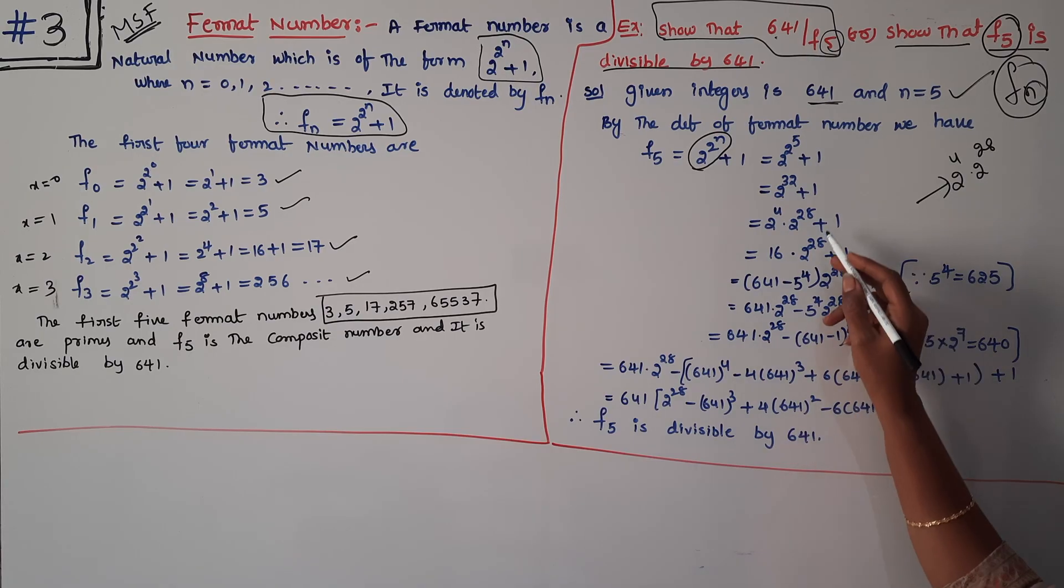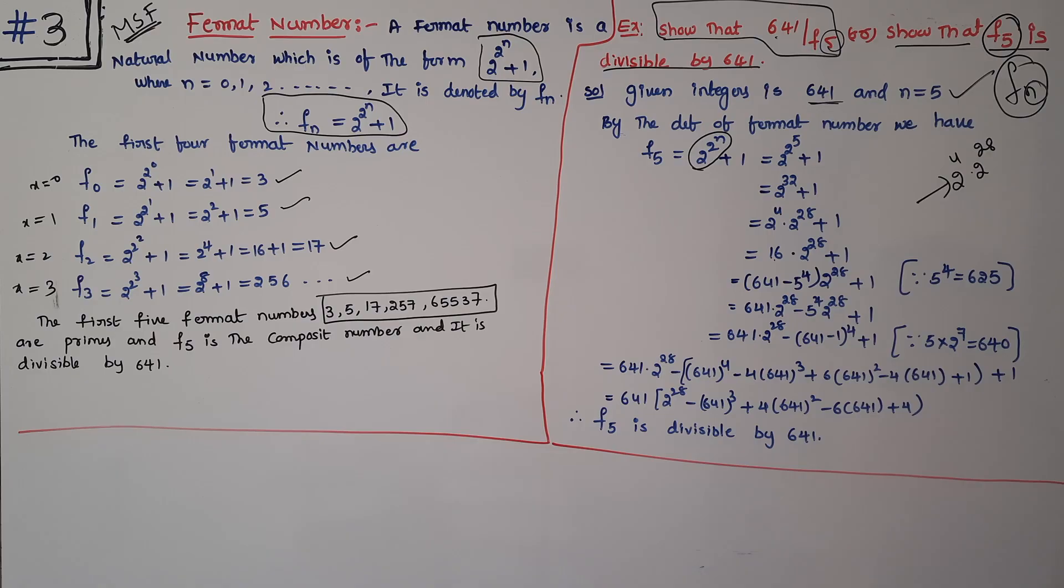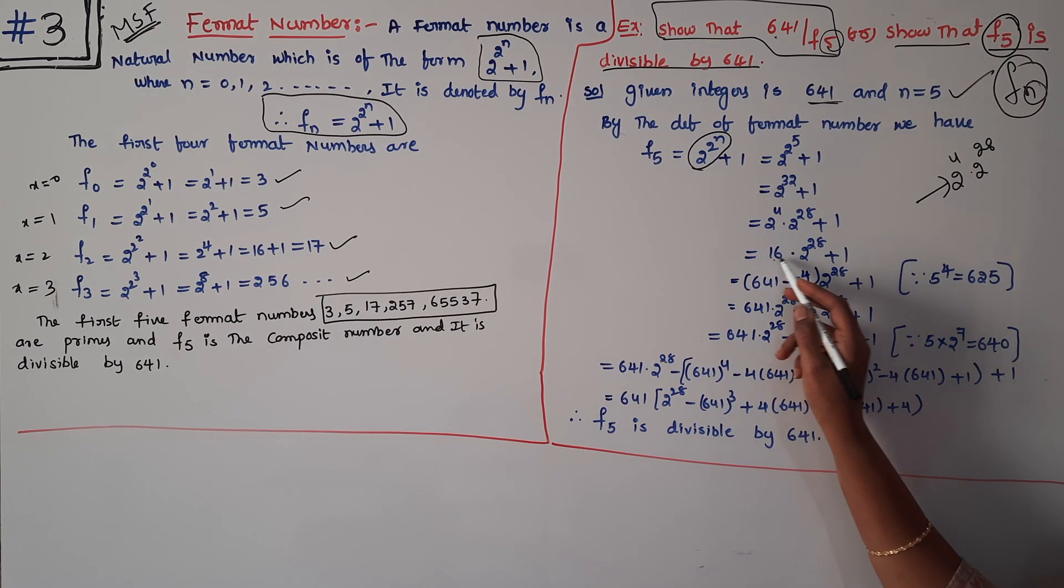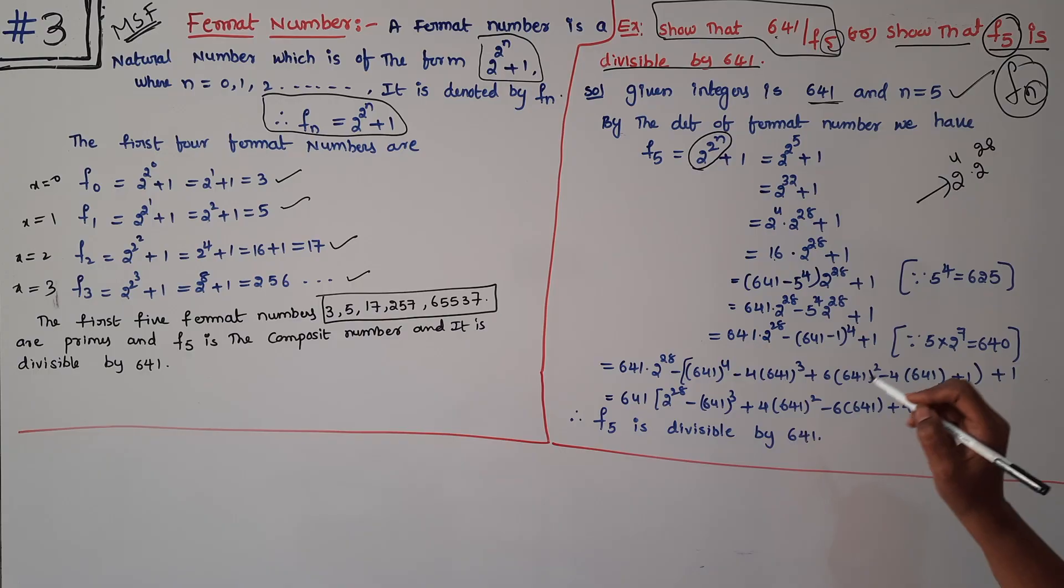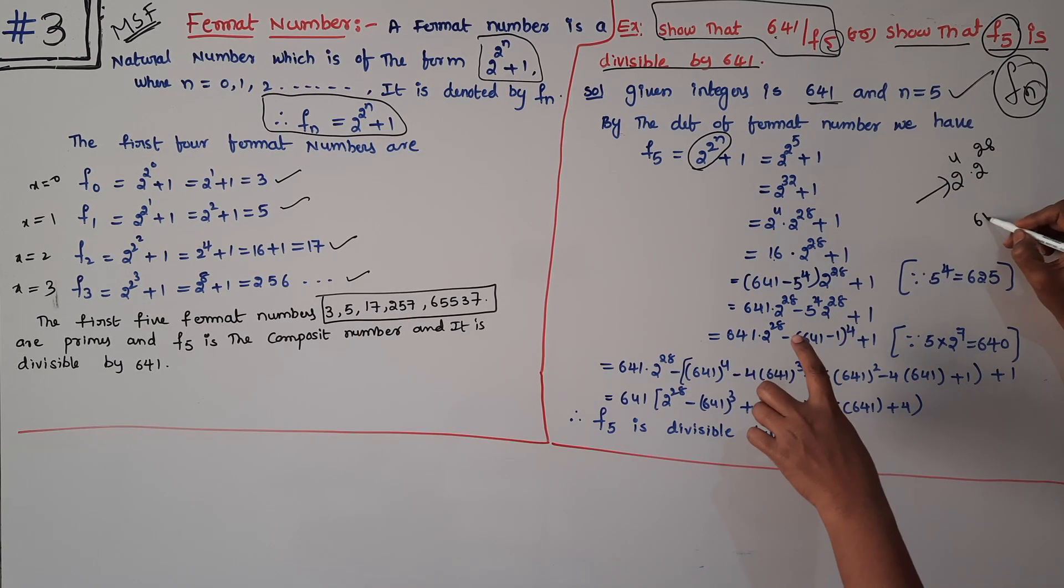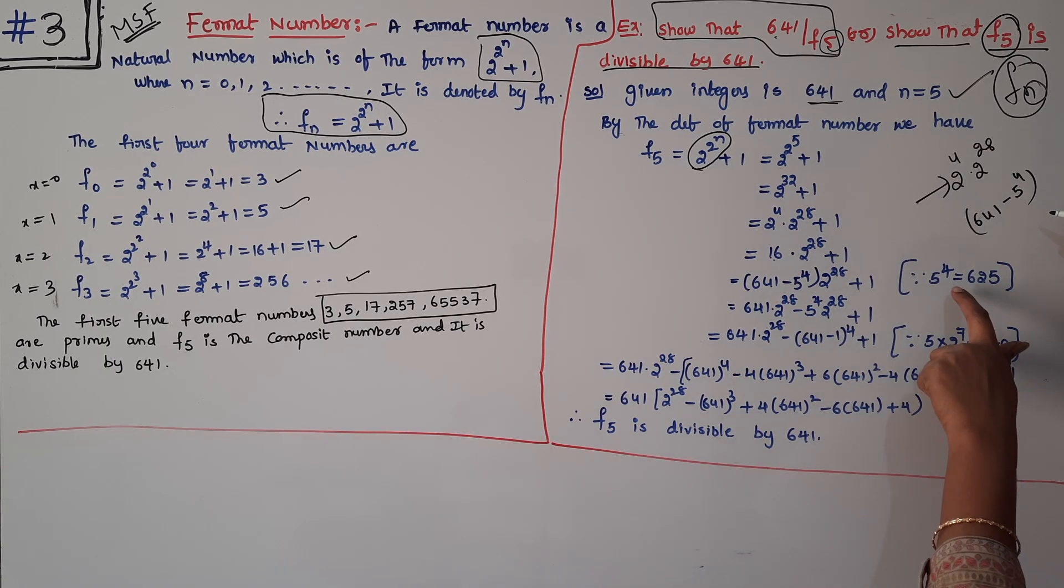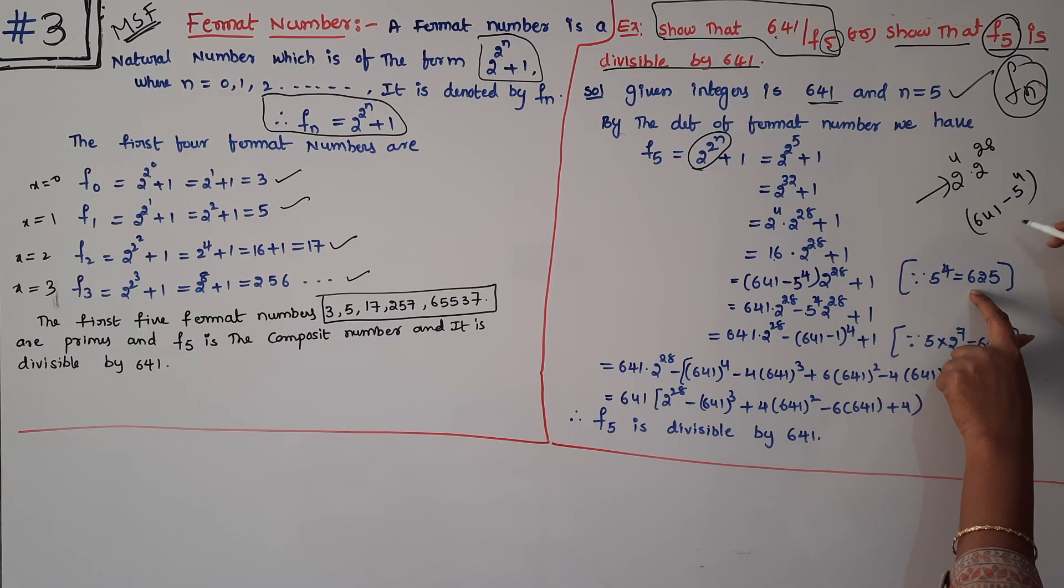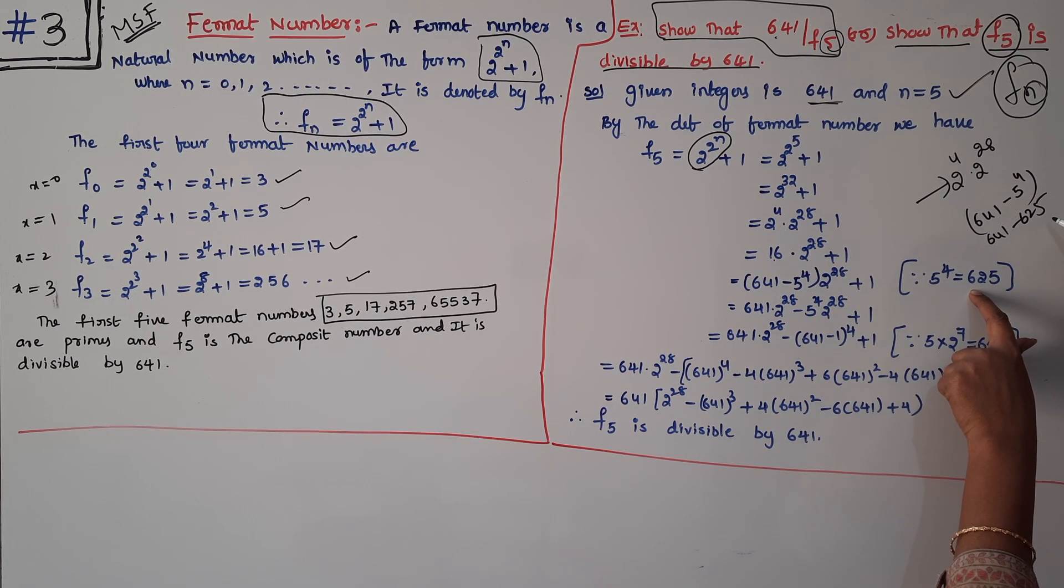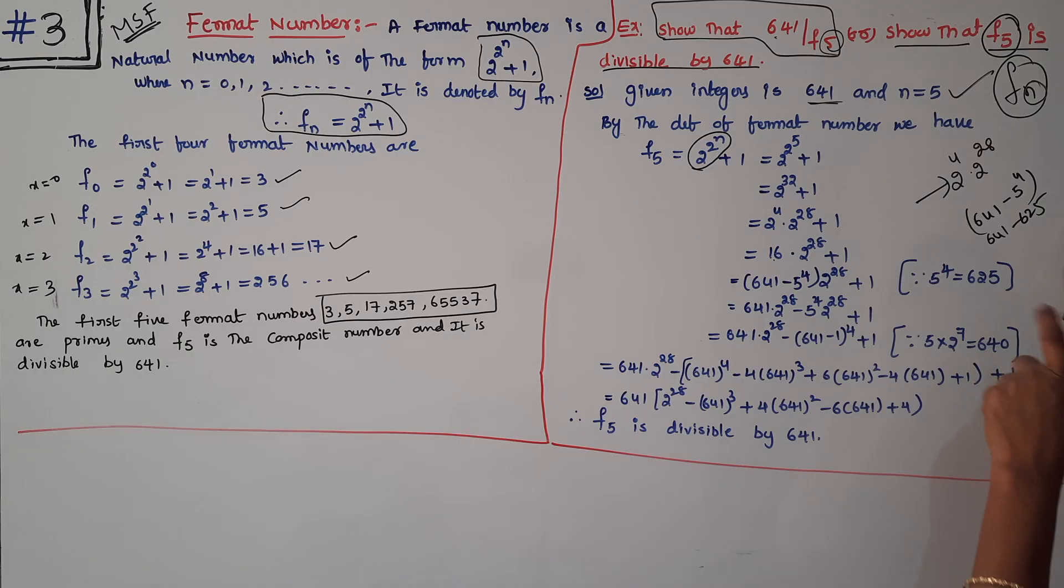To show that 641 is divisible by F_5, I will say 641 - 625 = 16. So 641 = 625 + 16, which is 5^4 + 2^4.